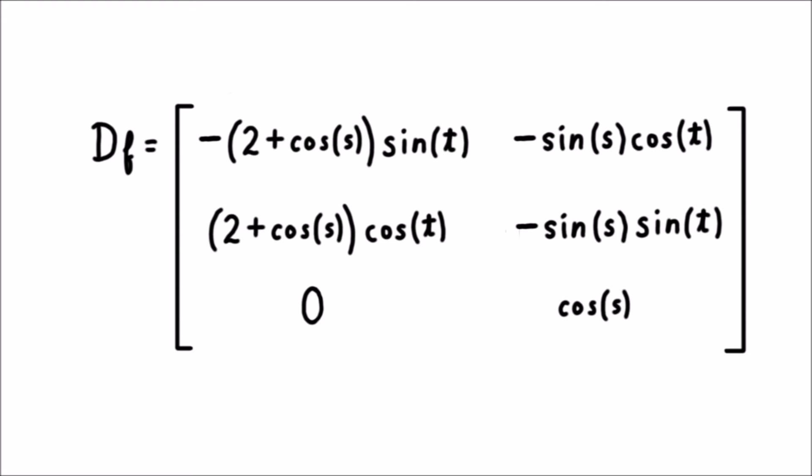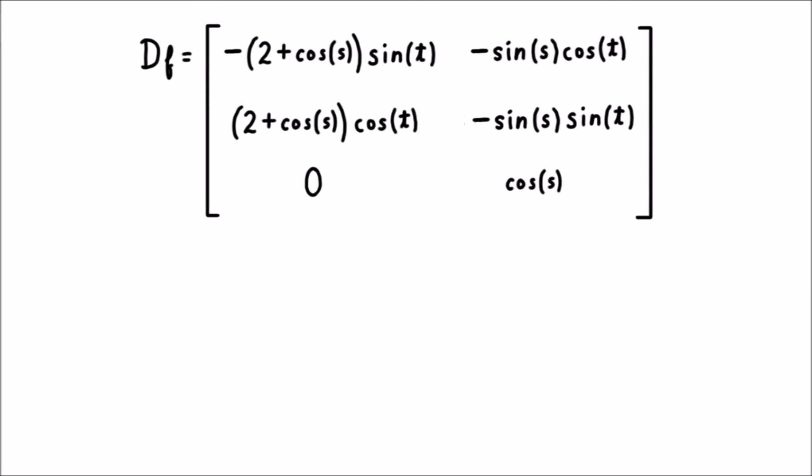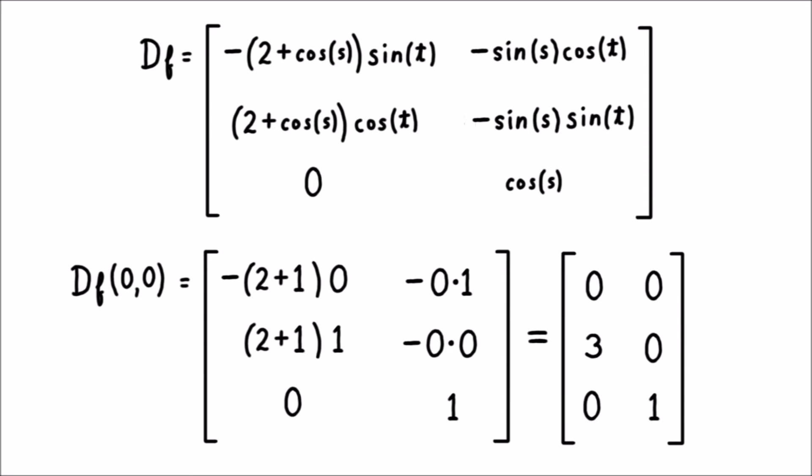And we can ask again, what does this all mean? Well, we know that matrices represent linear transformations. If we pick values for s and t and plug them in, we'll get a matrix full of real numbers, representing a linear transformation that turns vectors in the plane into vectors in space. For example, if we set both s and t equal to 0, this matrix becomes [[0, 3, 0], [0, 0, 1]]ᵀ.